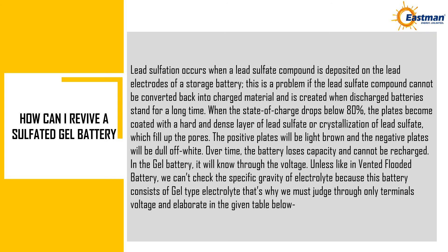Lead sulfation occurs when a lead sulfate compound is deposited on the lead electrodes of a storage battery. This is a problem if the compound cannot be converted back into charged material, and it is created when discharged batteries stand for a long time. When the state of charge drops below 80%, the plates become coated with a hard, dense layer of lead sulfate (crystallization), which fills up the pores. The positive plates will be light brown and the negative plates will be dull off-white. Over time the battery loses capacity and cannot be recharged. In a gel battery, this is detected through voltage, since we cannot check the specific gravity of the electrolyte as it is gel type.